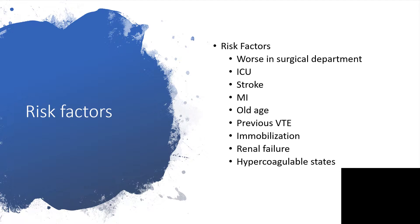There are many risk factors associated with the formation of deep vein thrombosis and subsequent pulmonary embolism. The surgical department has the worst outcomes for the reasons already mentioned. Intensive care unit patients are confined to the same place with little to no mobilization. Stroke patients have impaired mobility. Immobilization and old age — because patients are no longer active — are major factors. A previous episode of venous thromboembolism also increases the likelihood of recurrence.